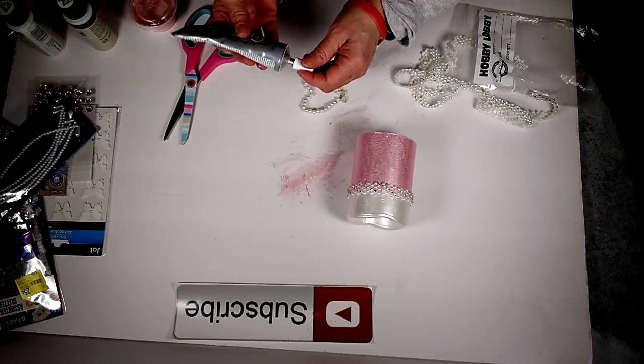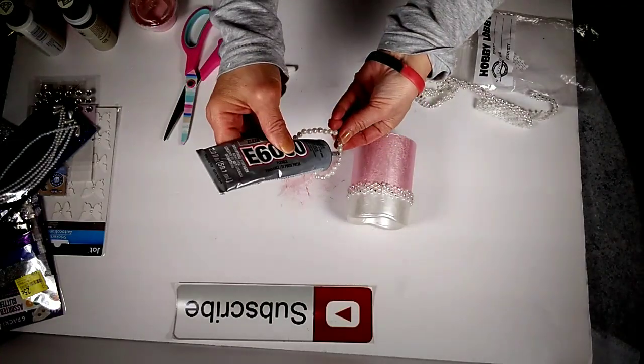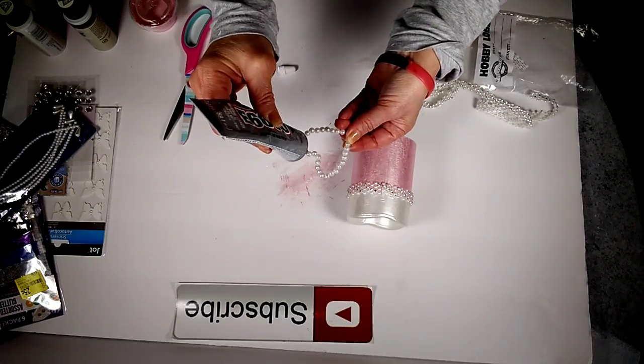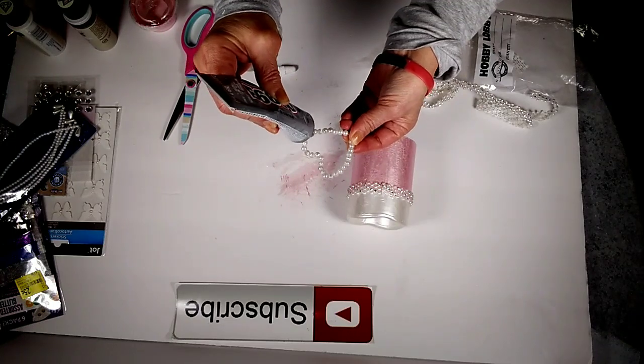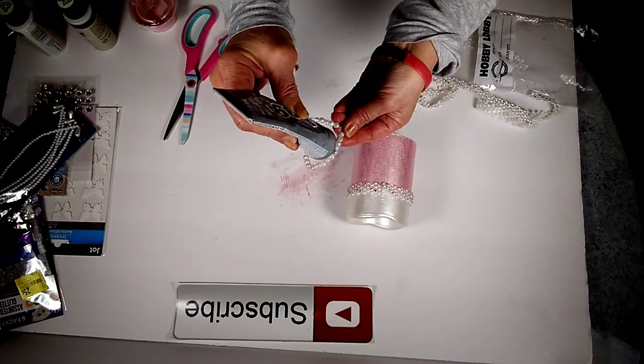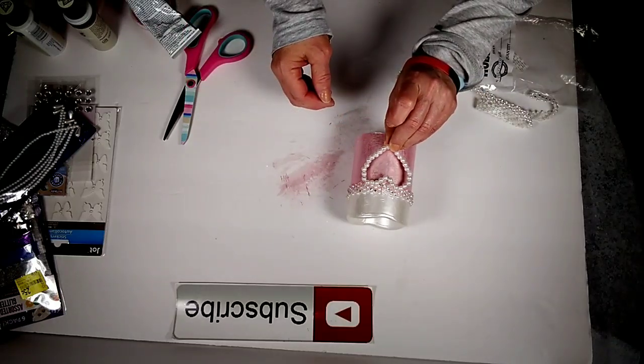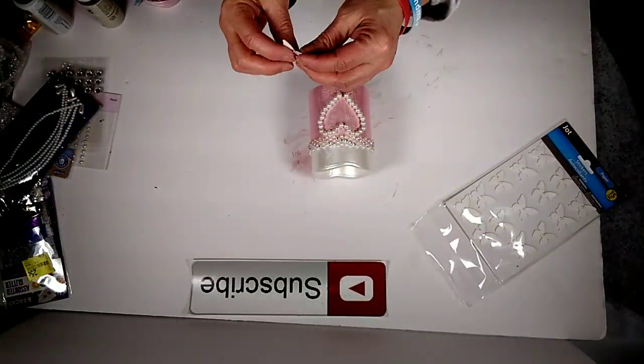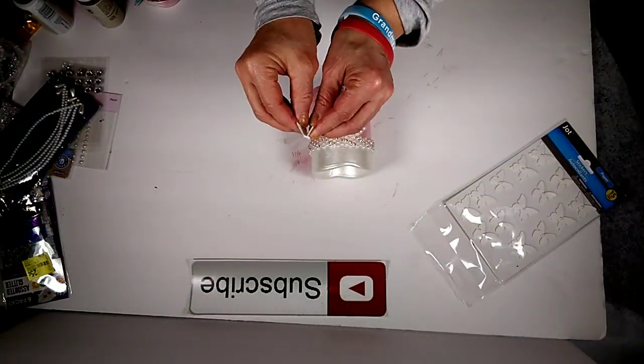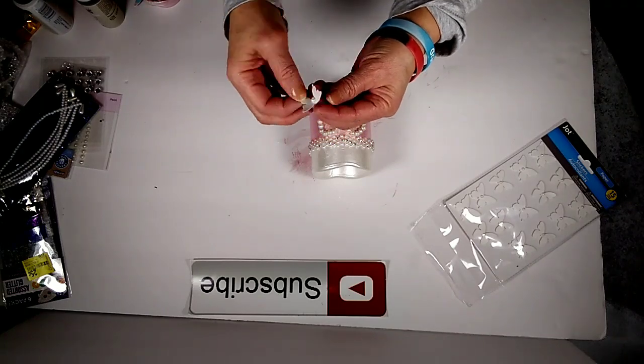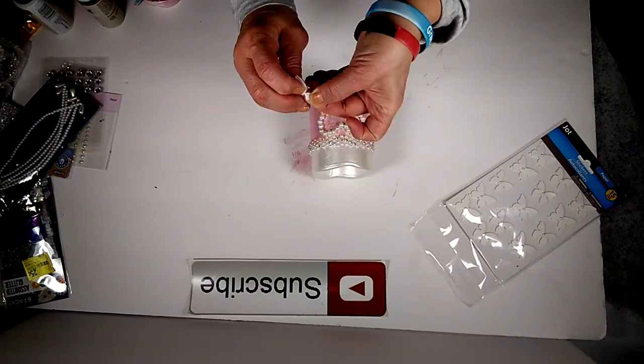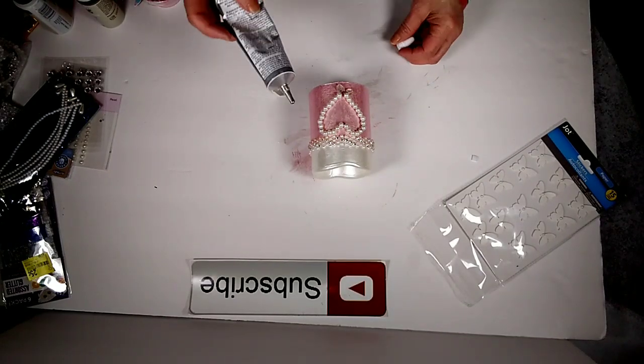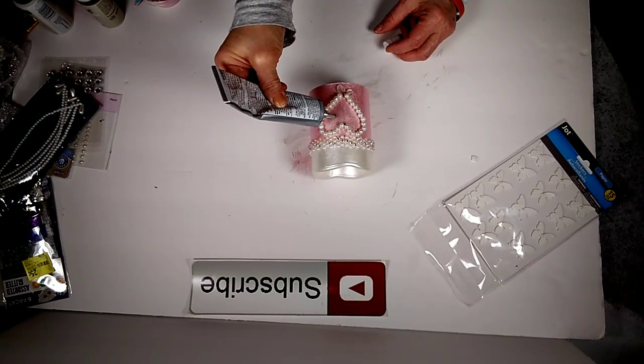Here I'm taking this pearl wire and I already shaped it into a heart. Now I'm going to use strong adhesive to glue it to the candle. I purchased this pearl wire from the Dollar Tree years ago. Here I'm taking some of these Jot butterfly stickers. I remove the little sticker from the back and I fold the wings inward so that it looks like it's flying. And then using a dab of strong adhesive, I'm going to glue two in the middle of the heart.